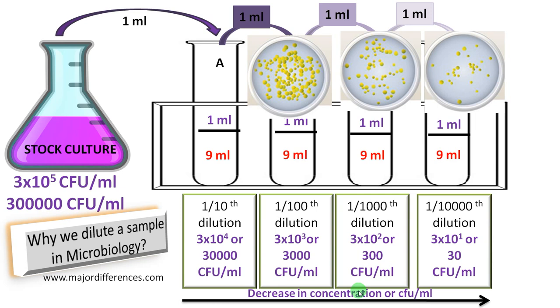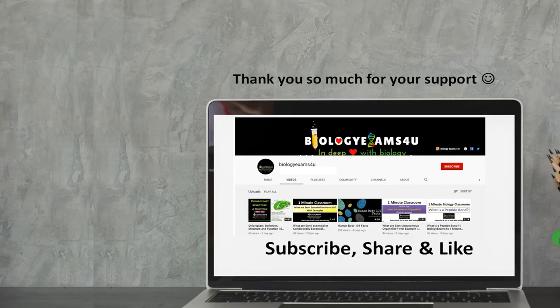In short, as you can see, serial dilution is a procedure where the concentration decreases by the same factor — 10 times — at each successive step. The purpose is first to get a countable number of colonies, and second, for some specific procedures we need to start with a specific concentration, such as 300 CFU per ml. Hope you understand why we dilute a sample in microbiology. If you are new to this channel, please consider subscribing. Thank you so much for your support.